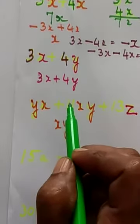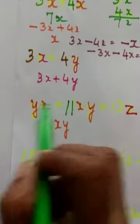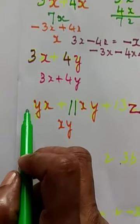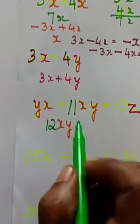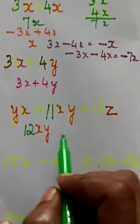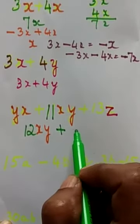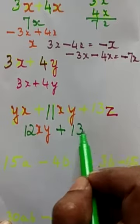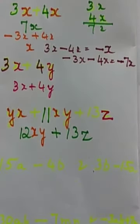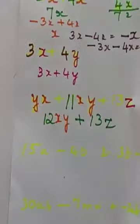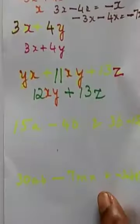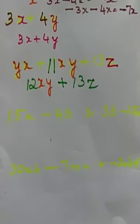If nothing is there means we have to consider it as 1. 11 plus 1, 12. No sign problem here. Plus 13z. Okay, this is the answer. 12xy, 13z.